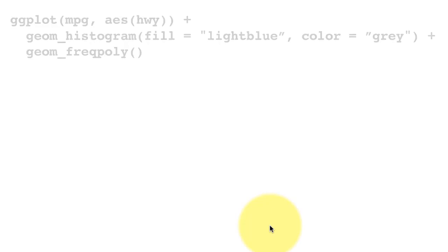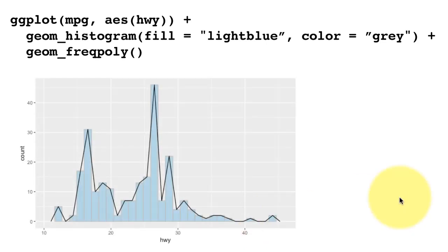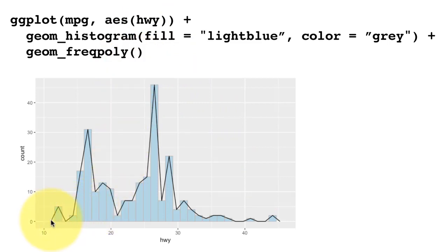Here I've overlaid the histogram and the frequency polygon on top of each other. I changed the fill color of the histogram just so the line of the frequency polygon is more easily visible. From this overlay you can clearly see that the frequency polygon goes through the middle of each of the bars — there's a bar close to zero, another bar close to zero, and the line goes to the middle of each bar. So there is a complete one-to-one correspondence between the frequency polygon and the histogram.